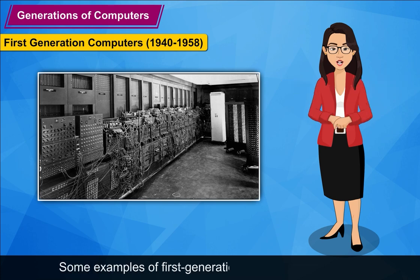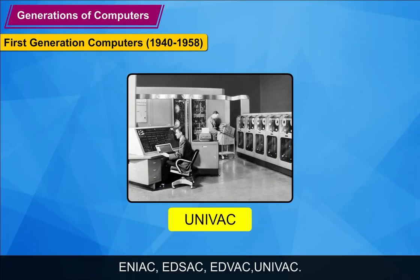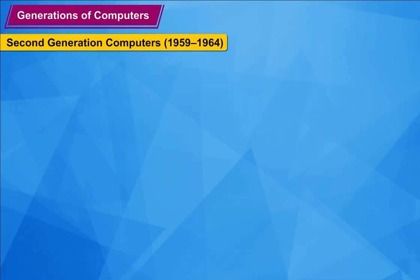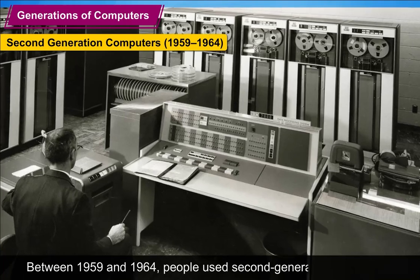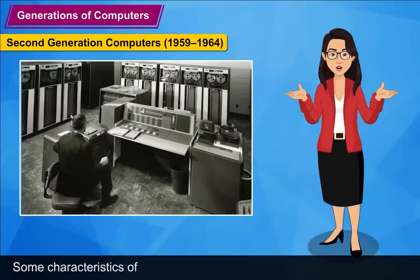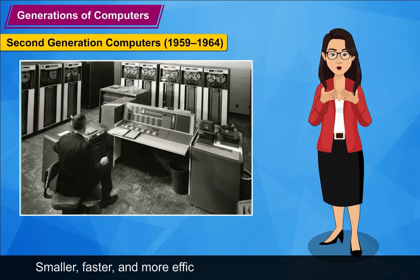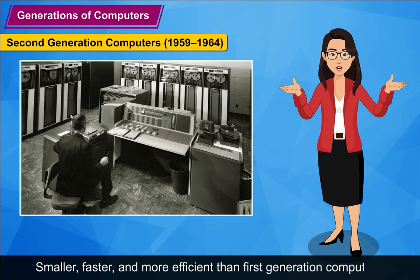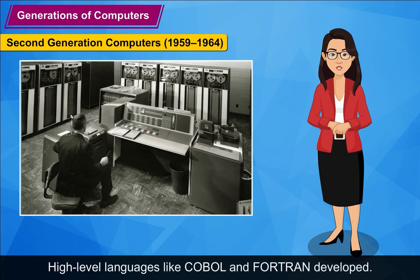Some examples of first generation computers are Mark I, ENIAC, EDSAC, EDVAC, and UNIVAC. Second Generation Computers (1959–1964): Between 1959 and 1964, people used second generation computers. Some characteristics include: smaller, faster, and more efficient than first generation computers. Magnetic tape and disks were introduced. High-level languages like COBOL and FORTRAN were developed.